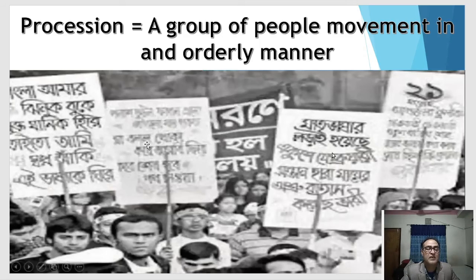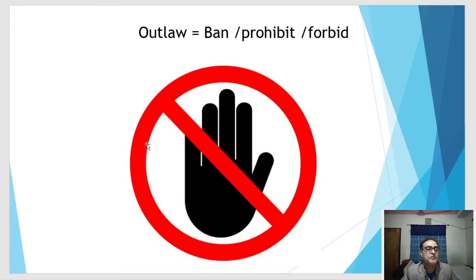Next word: 'procession.' Look at the picture and try to guess the meaning. A procession means: a group of people moving together in an orderly manner. Next word: 'outlaw.' Look at the picture — sometimes we see this sign and know its meaning. Outlaw means: ban, prohibit, or forbid.